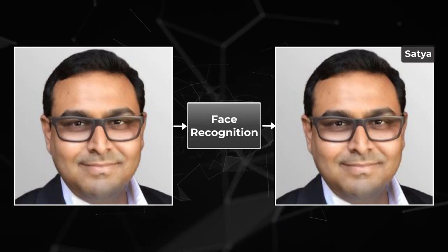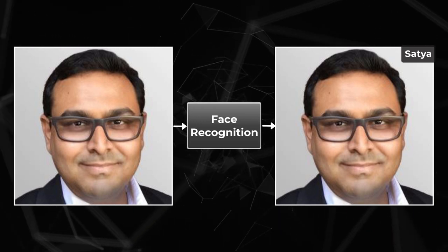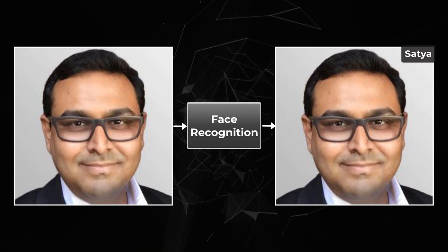In computer vision, on the other hand, the input is an image and the output is information. Notice the difference: image processing is image in and image out; computer vision is image in and information out. For example, in face recognition, the input is an image of a person's face and the output is the person's identity — image in, information out. So that's computer vision.